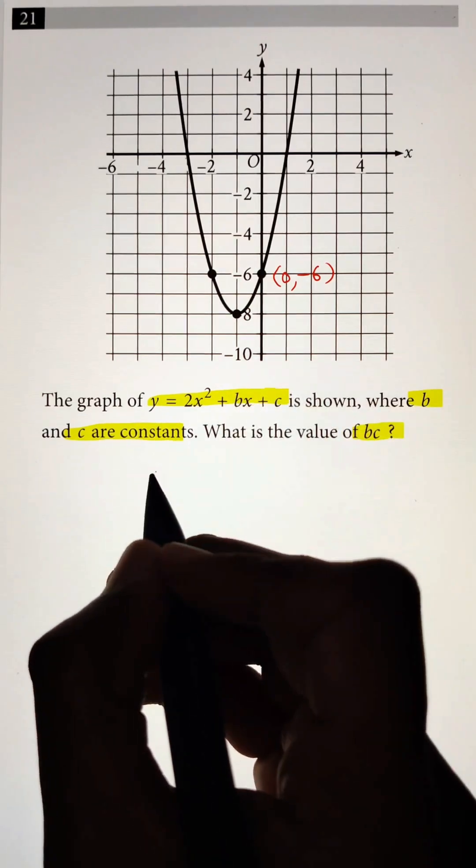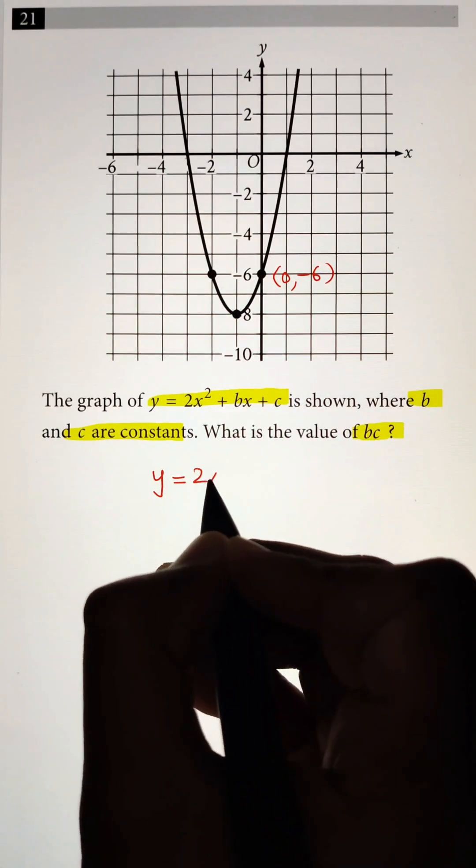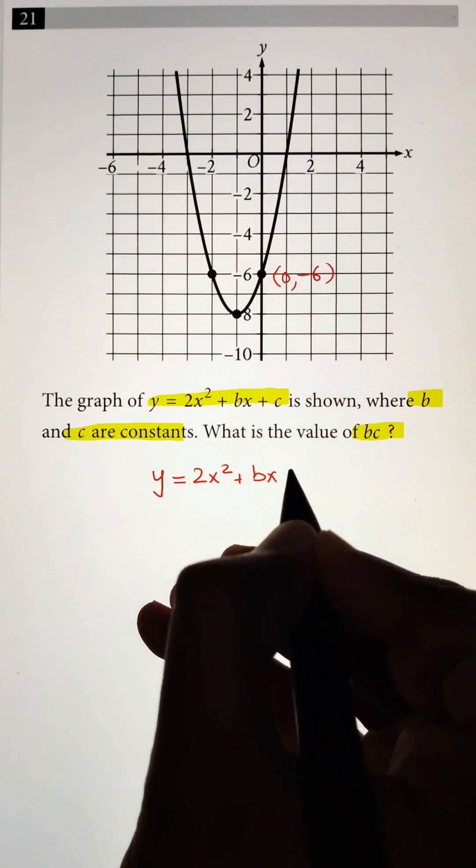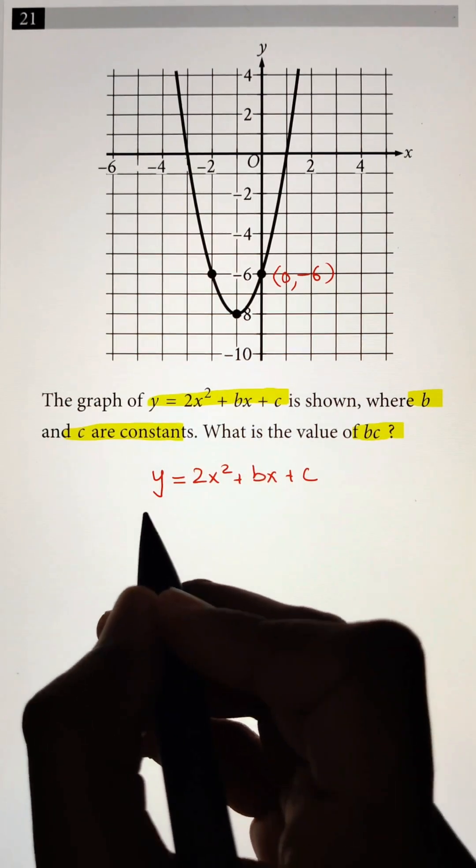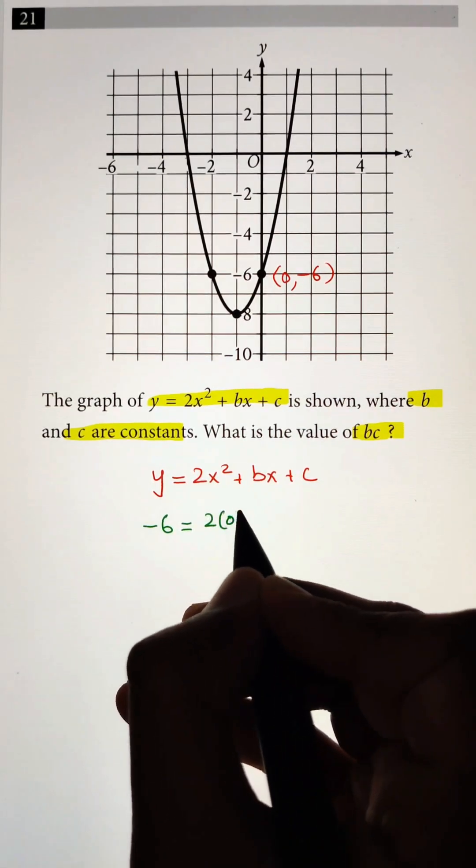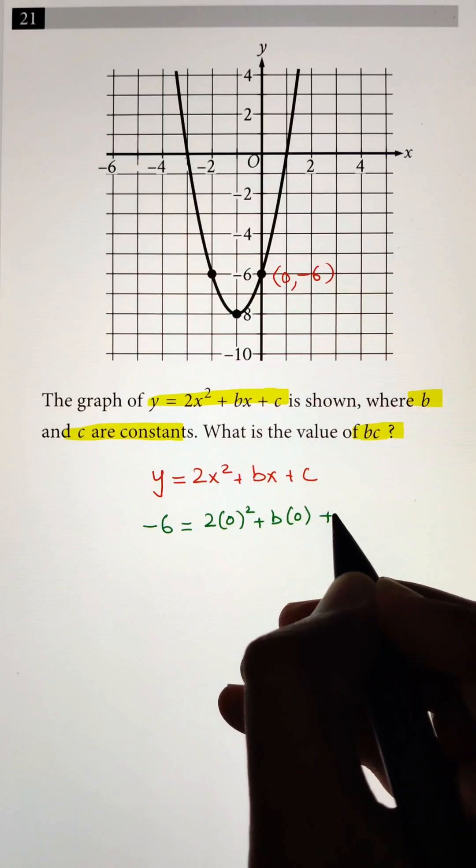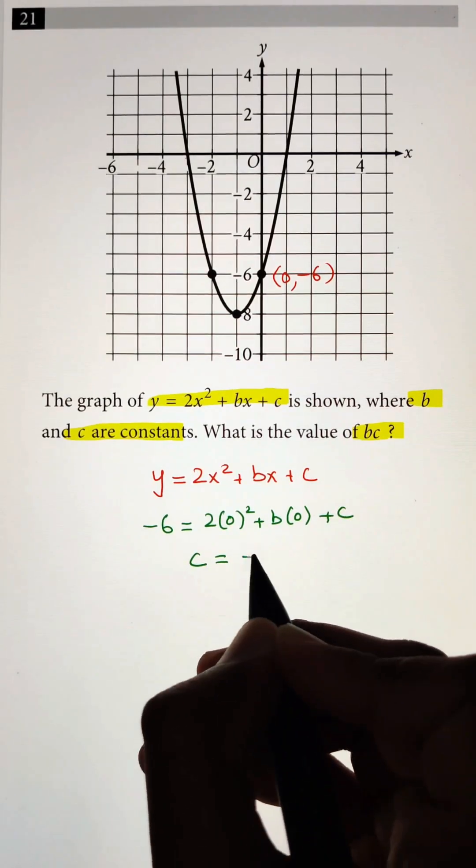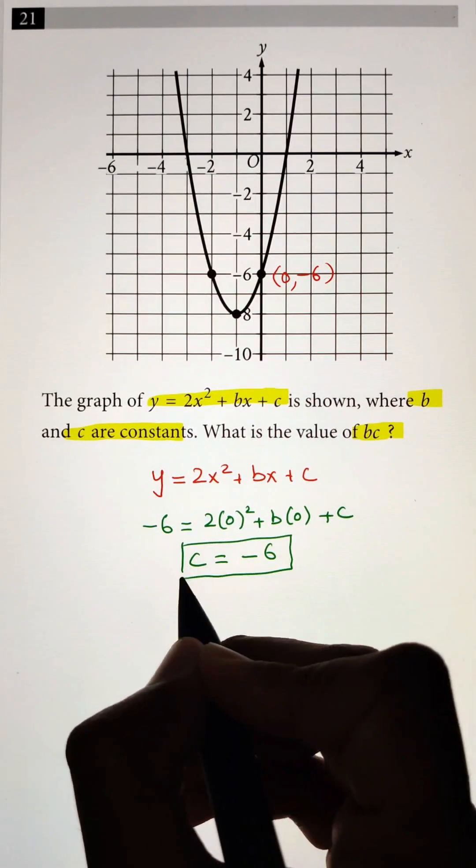So once we have this, let's plug it in. y equals two x squared plus bx plus c. We have a value of y equals minus six, x equals zero. So this will become c equals negative six.